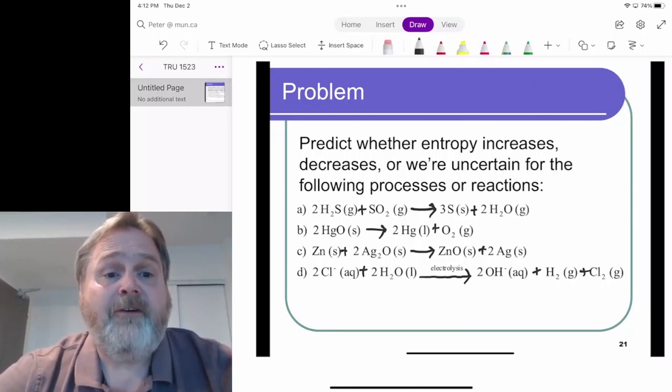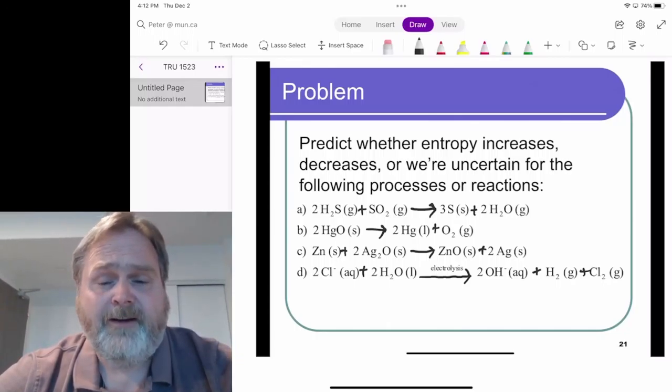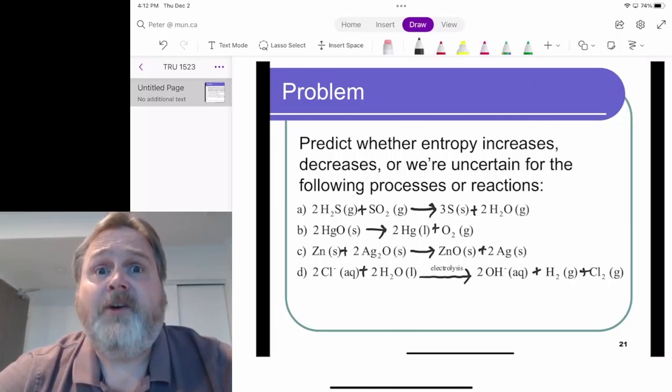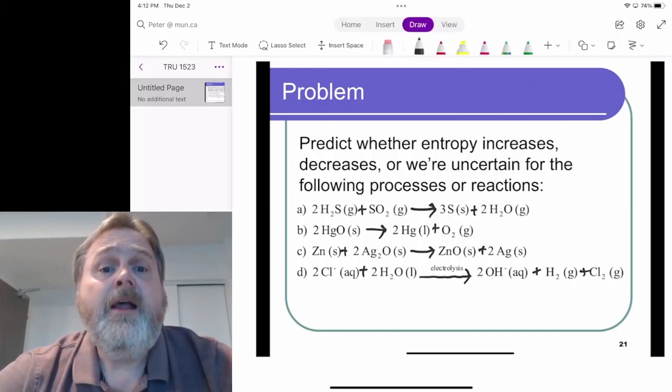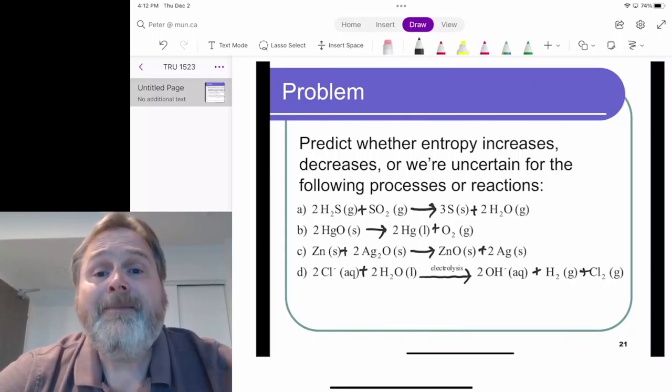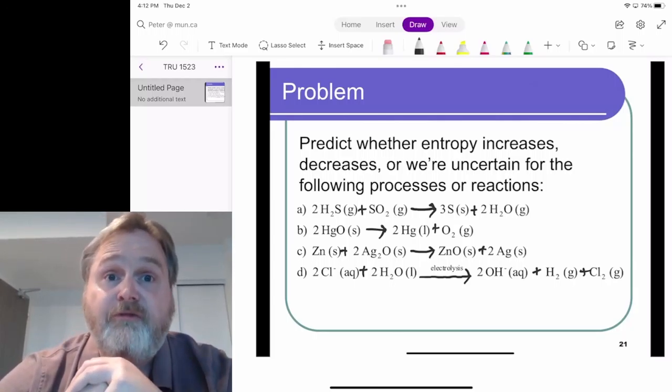So the first reaction is going from three stoichiometric coefficients, or let's say three moles of gas, to two moles of gas. Well, that's a whole lot less freedom of motion, a lot fewer molecules whizzing about the room in that particular case. So my prediction for A is that the entropy is decreasing for this process, just based on the idea of freedom of motion.